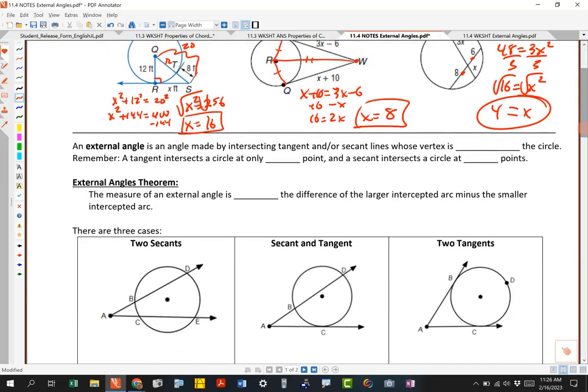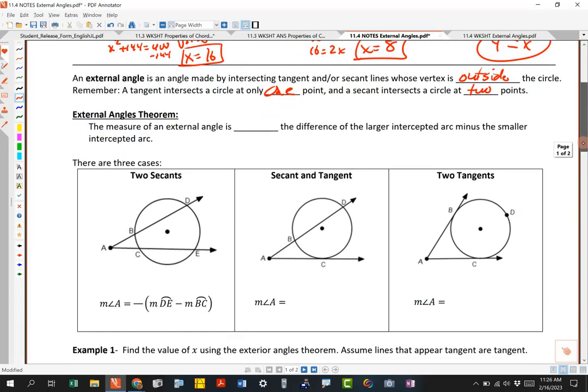So let's take a look at this. We're interested in knowing about external angles. We've done angles on the inside. We've done inscribed. We've done central angles, different things like that. So here's what an external angle is. It's no surprise it's made by intersecting tangent or secant lines whose vertex is outside, hence exterior. The vertex has got to be on the outside. So remember, a tangent intersects the circle at only one point, and a secant intersects the circle at two points.